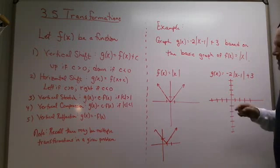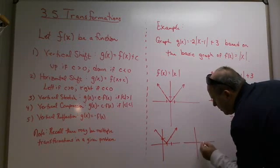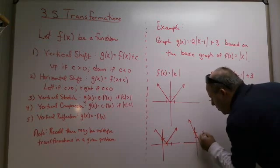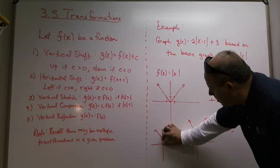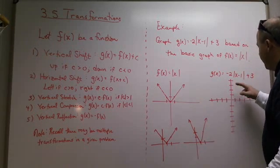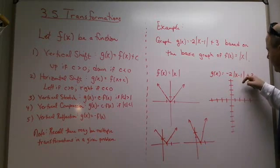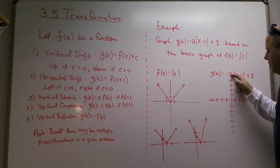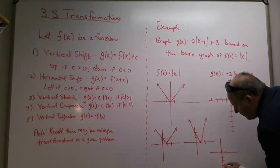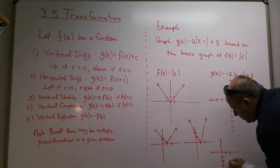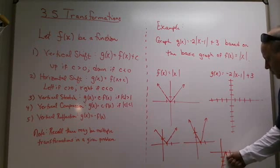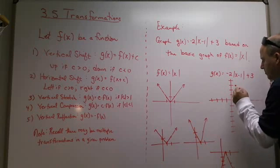So the first thing we do is take the V and move it one unit to the right — every one of the points goes one unit to the right. Then the two is going to stretch it by a factor of two, so instead of being one unit apart, it will be two units from the y-axis. Every y-coordinate is doubled: if a y-coordinate is one, now it's two; if it was two, now it's four. Then the negative takes this graph and turns it upside down — that's the vertical reflection. And then finally, the plus three: take this image and bring it up three units.